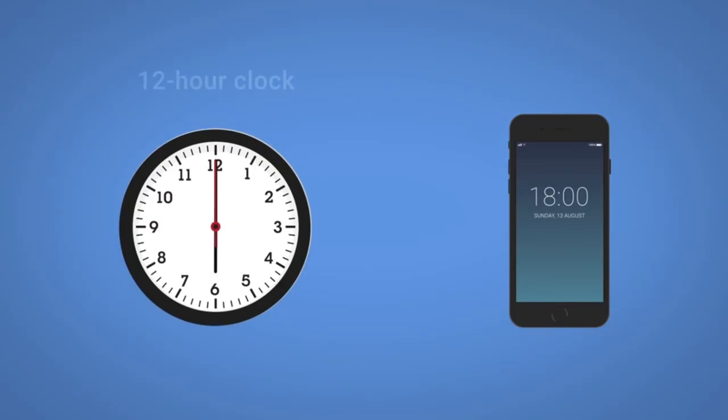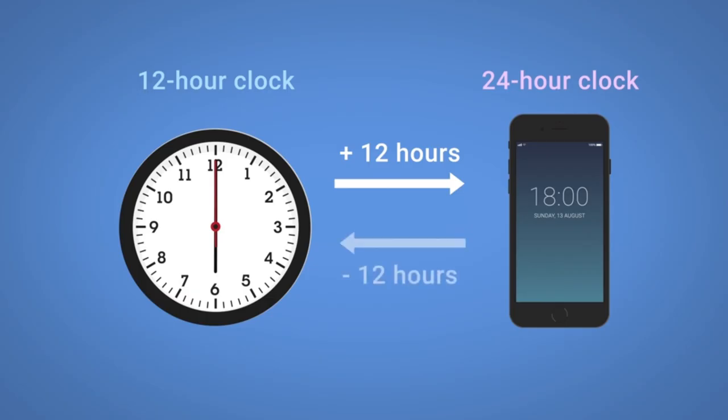In summary, to convert from the 12-hour clock to the 24-hour clock, add 12 hours. To convert from the 24-hour clock to the 12-hour clock, subtract 12 hours.